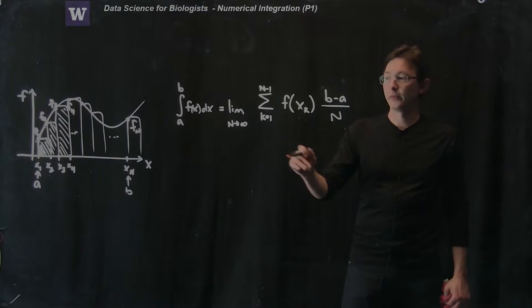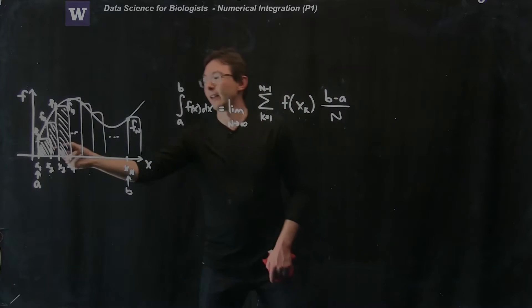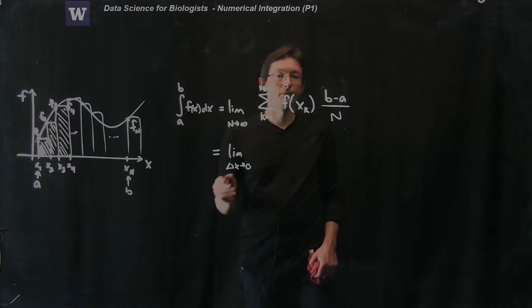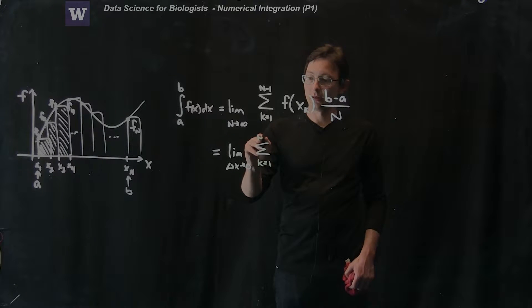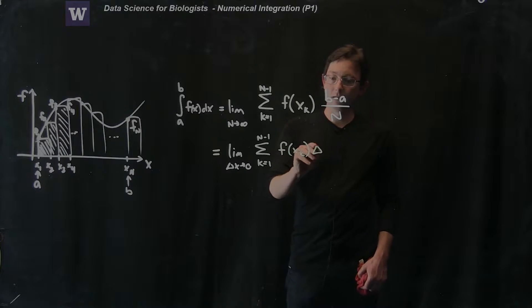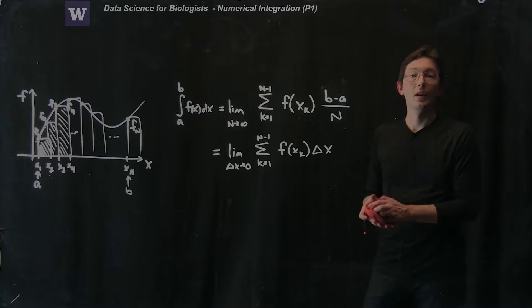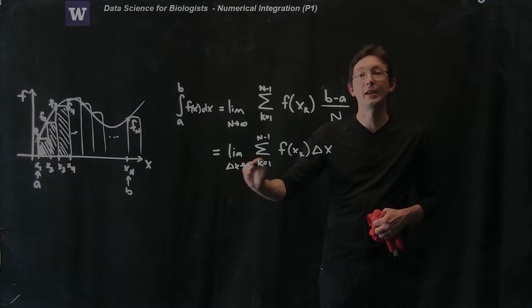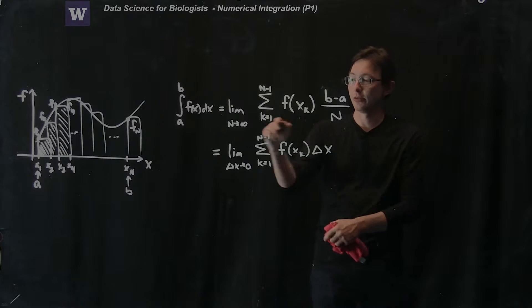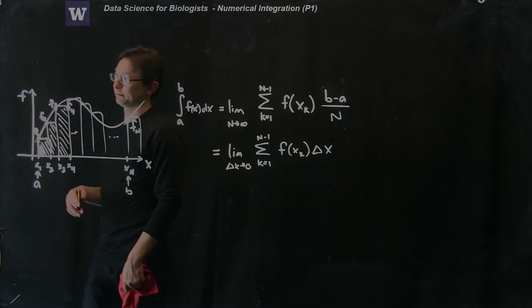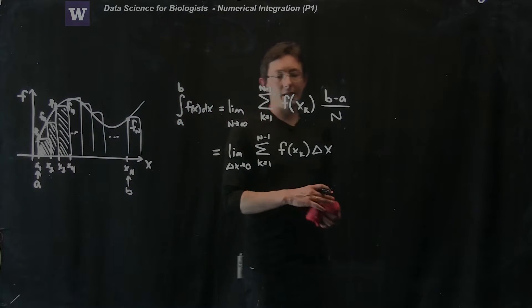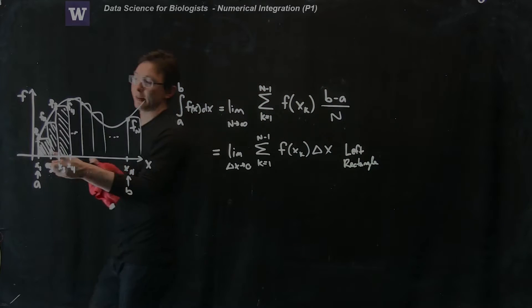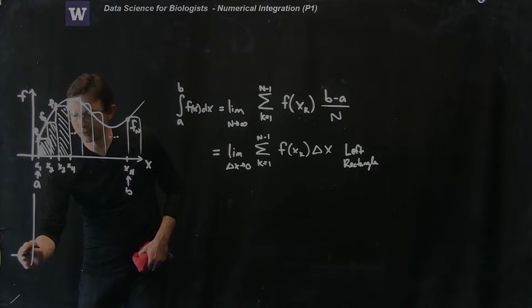This is what we normally use for the integral — this is the left rectangle rule because I'm starting from the left endpoints. This is equivalent to saying the limit as delta x goes to 0 of the sum from k equals 1 to n minus 1 of f(xk) times delta x. Just like in numerical differentiation, we're going to approximate this integral using a finite delta x rather than taking it to zero. This is the left rectangle; I could also do something similar with the right rectangle.